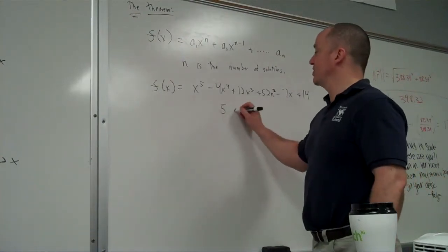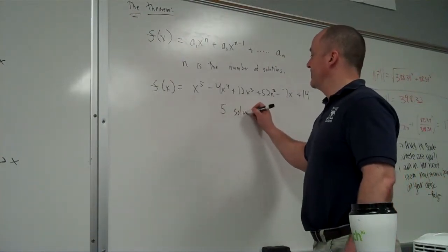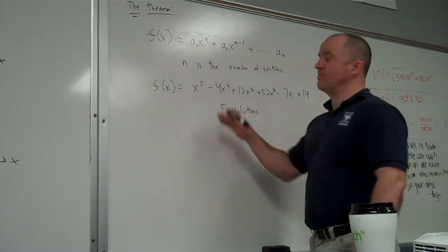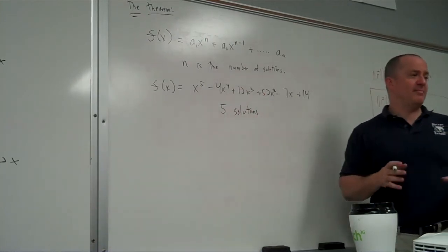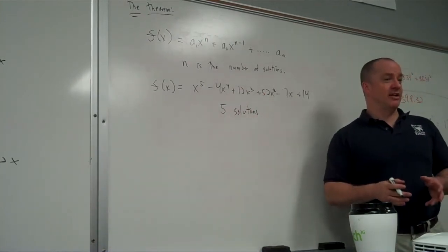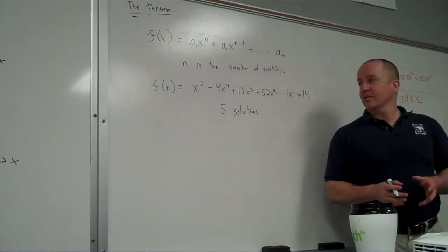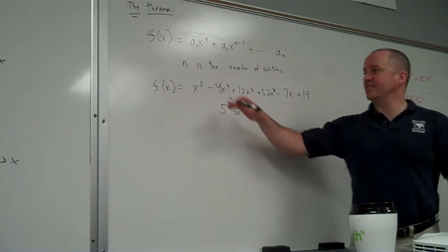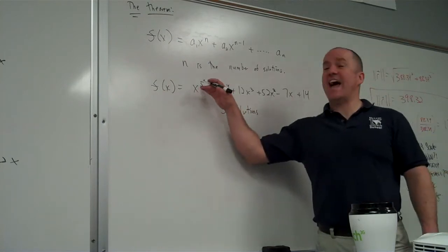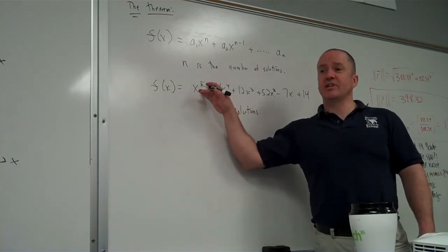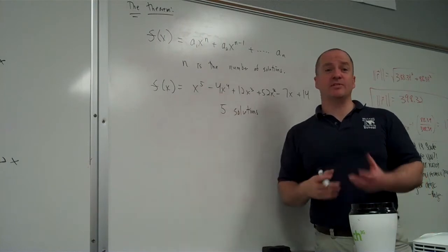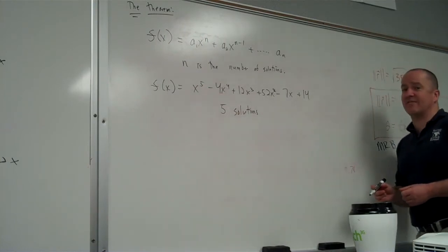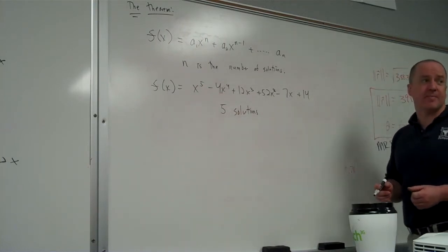This automatically has five solutions. Some of those solutions might repeat, and some might be imaginary. This has five solutions, but some of them might repeat themselves, and some of them might be imaginary. So it doesn't necessarily have five x-intercepts.